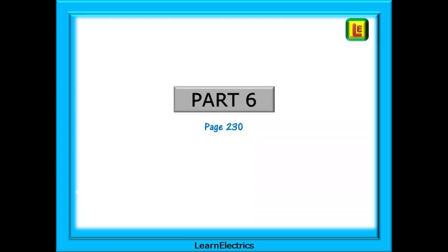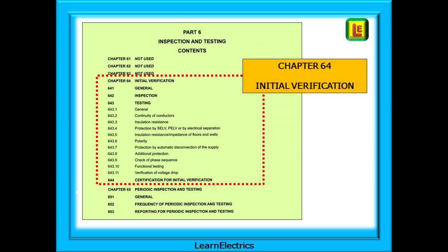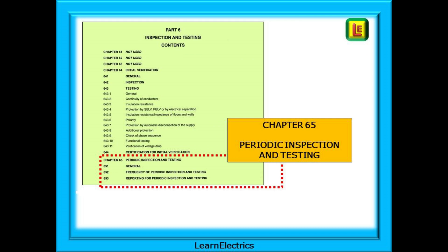We shall go now to Part 6 on page 230. Part 6 begins on page 230. This is the inspection and testing contents page. It has much more detail than page 3 — learn to find this page quickly, it will be your friend in the exam. Chapter 64 is all about initial verification of an installation: what tests to do, what certificates to issue, etc. Chapter 65 is about periodic inspection and testing, the frequency of testing and reporting of results.